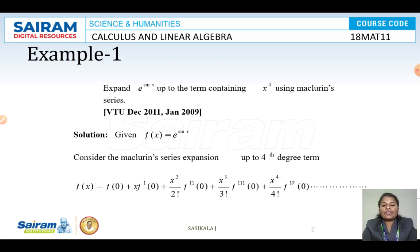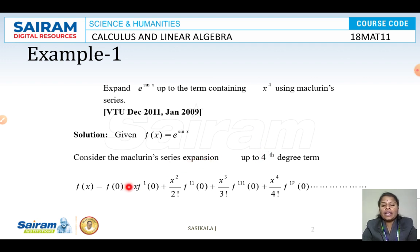What is given: F(x) = e^(sin x). We need to use the Maclaurin series up to the term containing x^4, meaning up to the 4th degree term. The formula is: F(x) = F(0) + x·F'(0) + (x²/2!) · F''(0) + (x³/3!) · F'''(0) + (x⁴/4!) · F⁴(0).